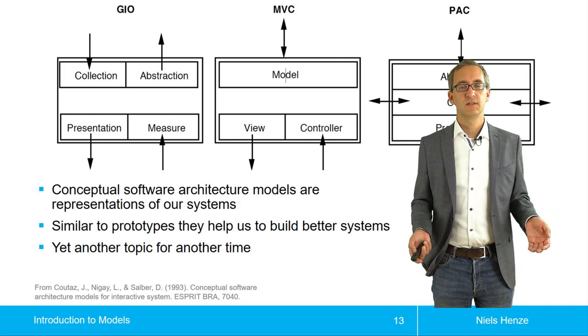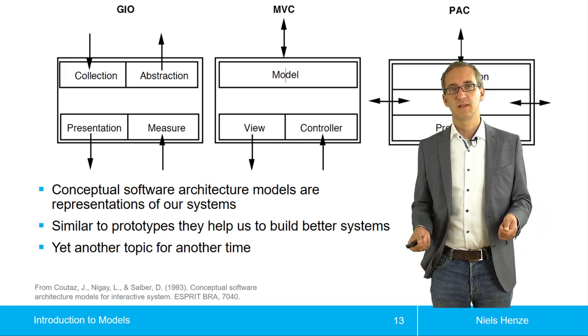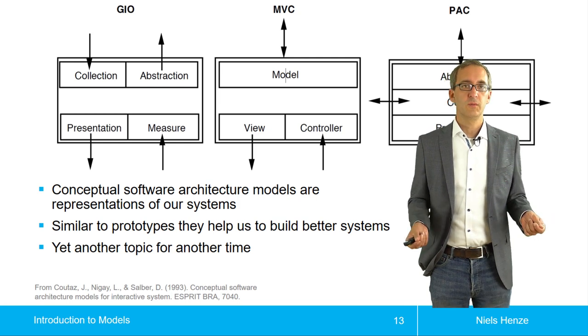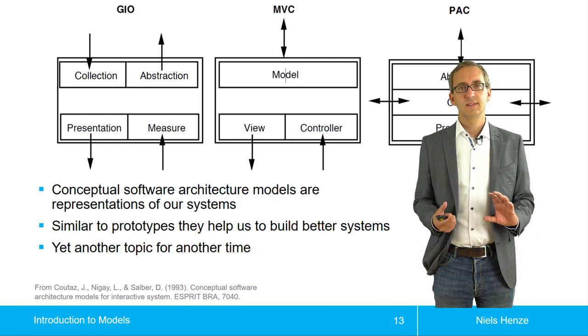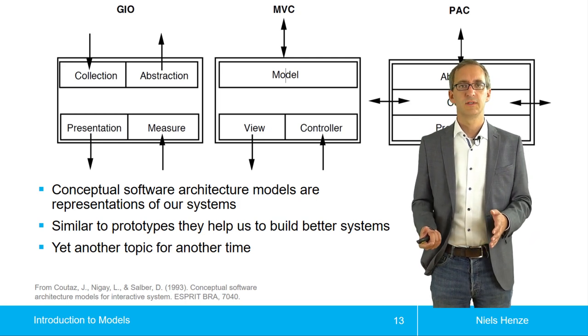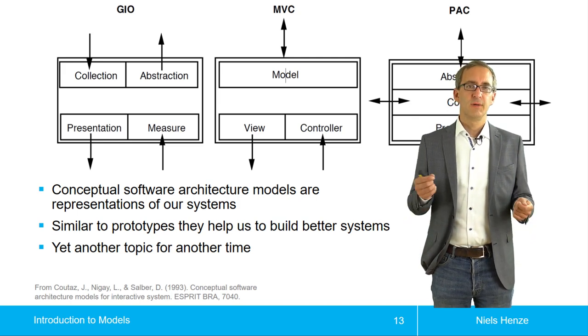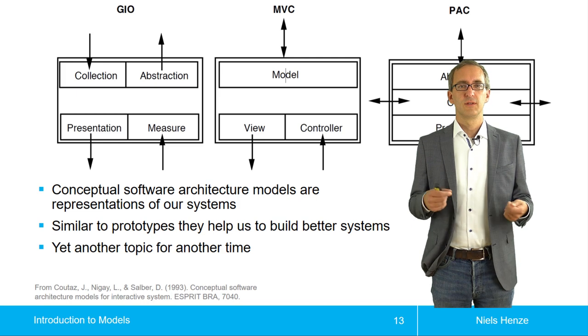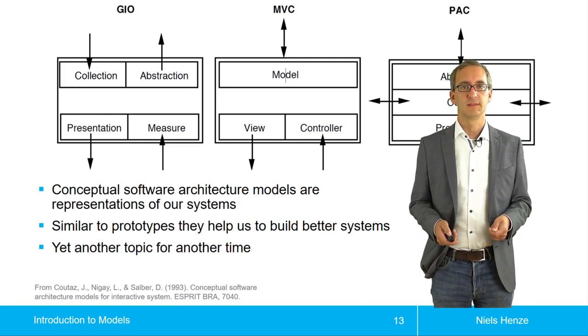Another example of something that we don't cover are conceptual software architecture models. The most prominent example is probably the model view controller model. And all these types of models, they help us in a similar way to prototypes to build better systems. But they are not models of the user, they are models of the system. So we will also cover that somewhere else.